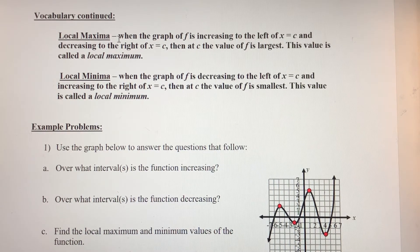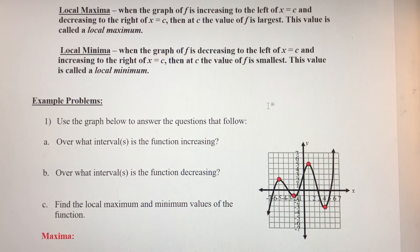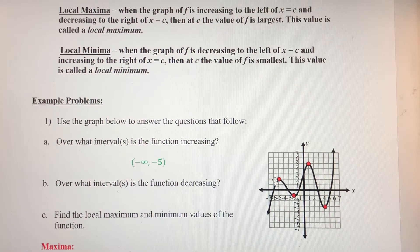So, local max values occur when a graph goes from increasing to decreasing; local minimum values when a graph goes from decreasing to increasing. Since we're using the terms increasing and decreasing, we need to understand the intervals over which this is happening. This function is increasing from negative infinity to negative 5, then it's decreasing over the next interval, and then it goes back to increasing.